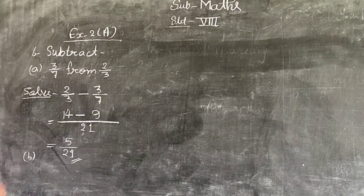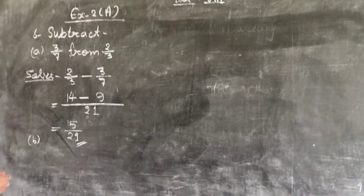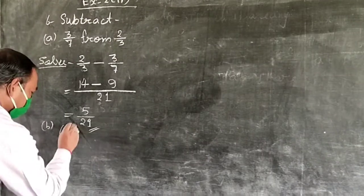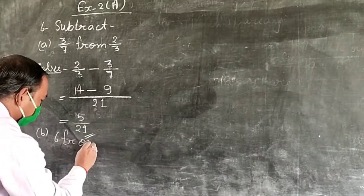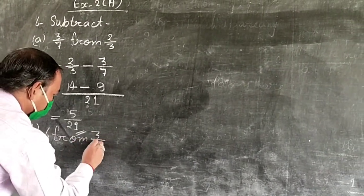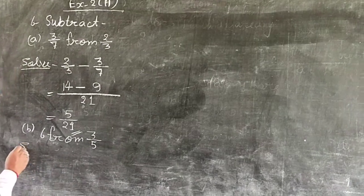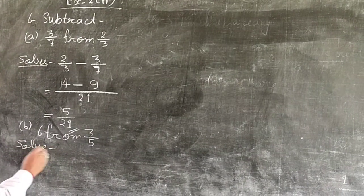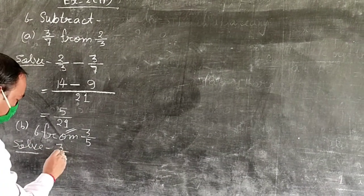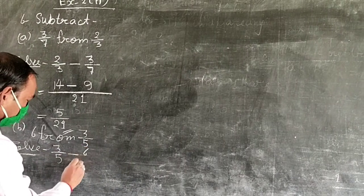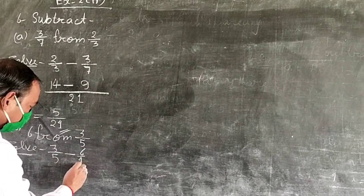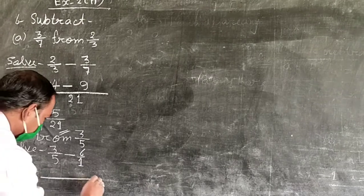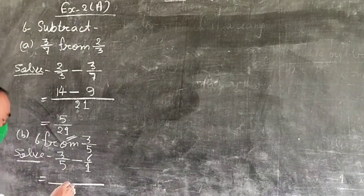Part B: 3 upon 5 minus 6. Solve: 3 upon 5 minus 6. 6 has denominator 1, and LCM of 5 and 1 is 5.